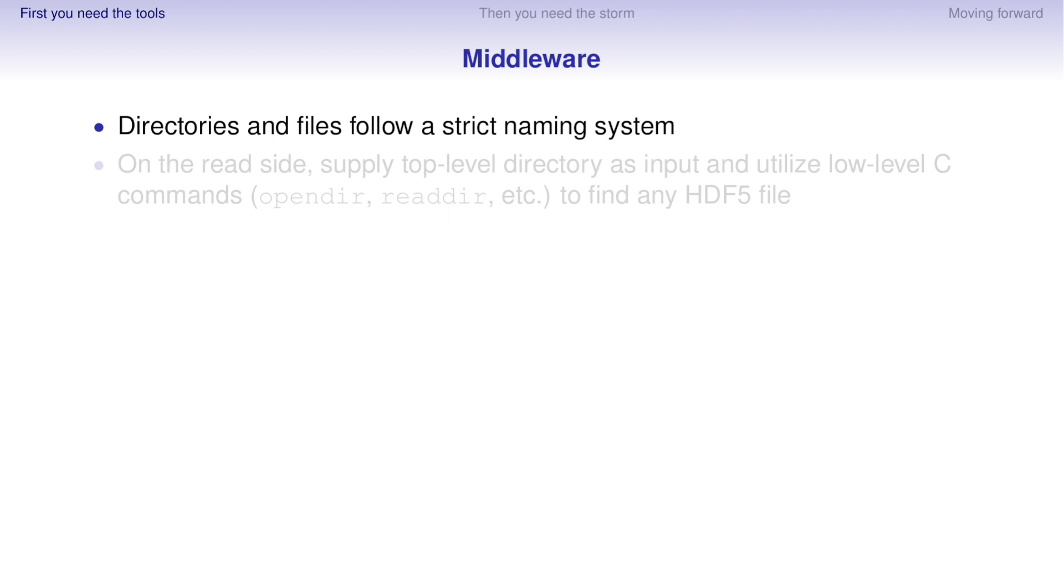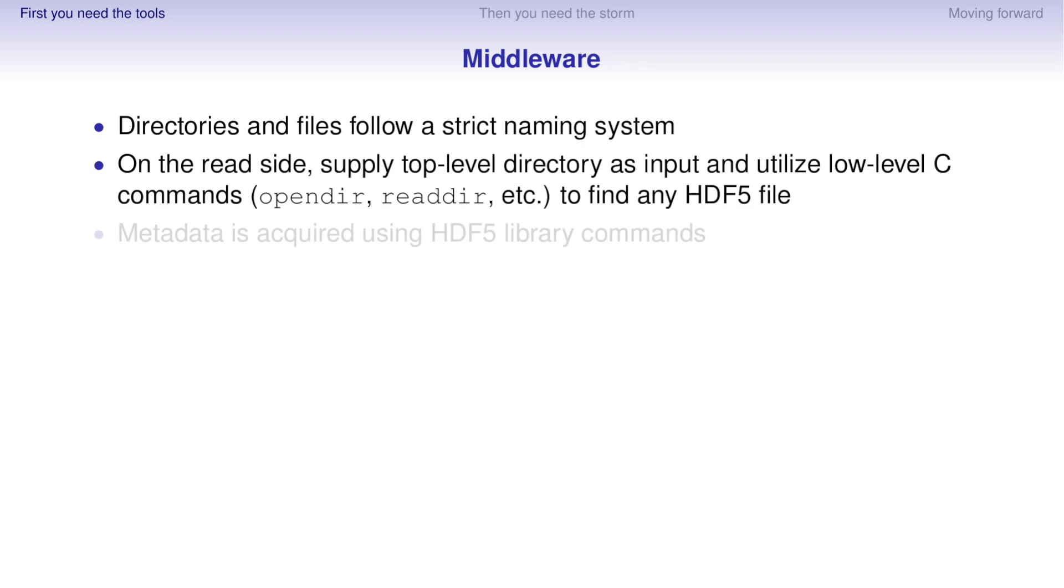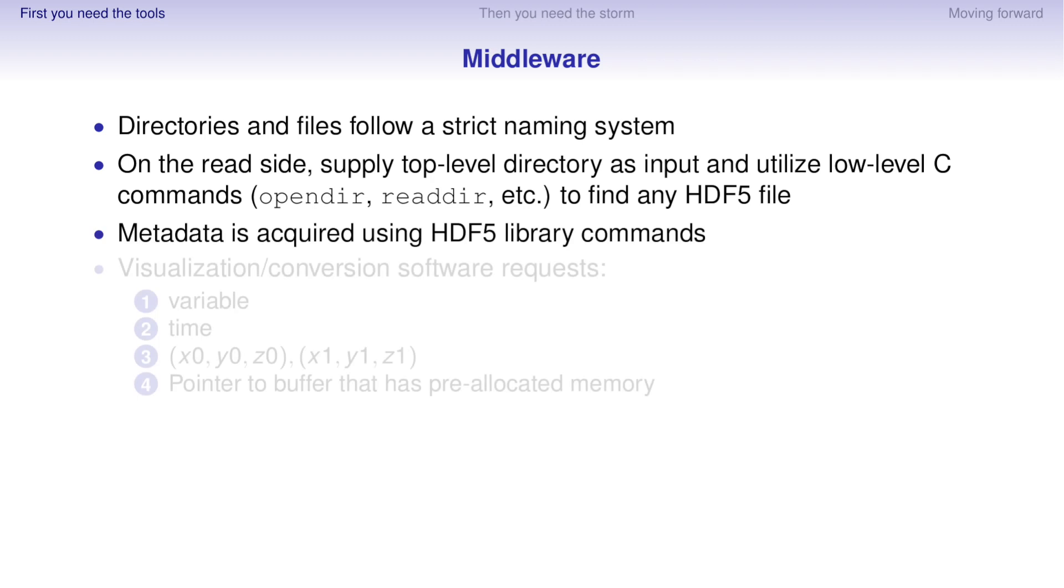A little bit about the middleware I developed. Essentially, directories and files form a very strict naming system that is then utilized by the reading algorithms. So I basically point to the top-level directory where the data lives. It goes out. It gets metadata using some low-level C commands. And once we have that metadata, it's sort of a handshake.